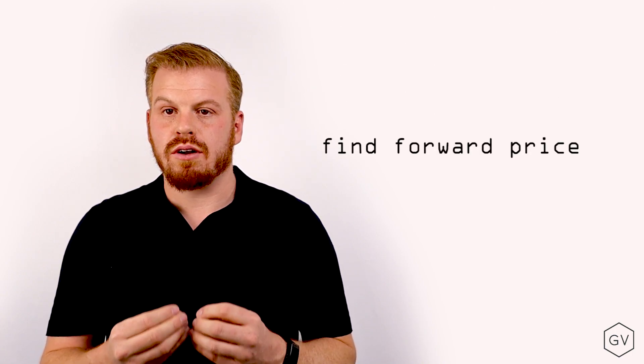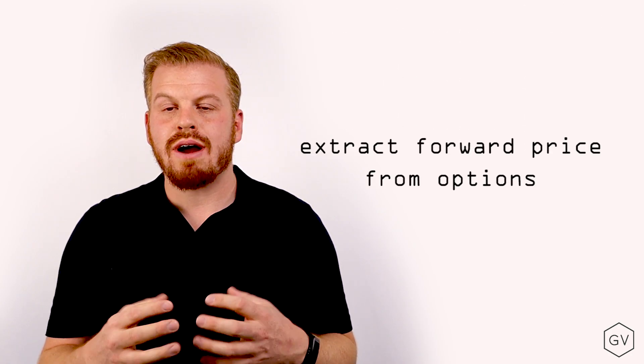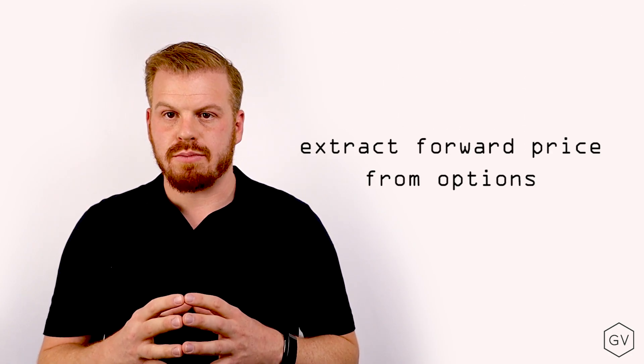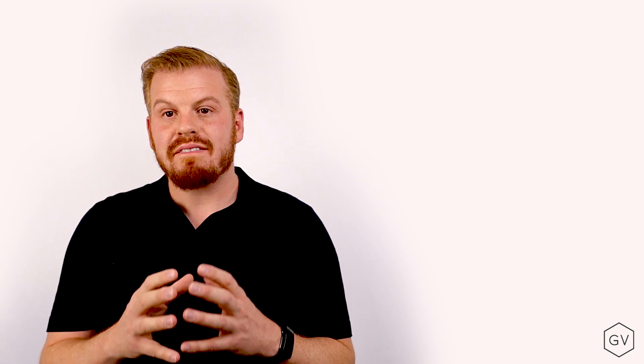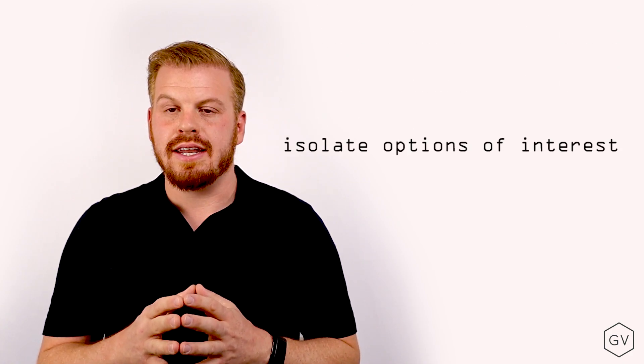This necessitates that we know what the forward price of the underlying is. We do this by looking at the strikes that are closest to the money and using the put-call parity in order to extract the forward price from the options market. Once we have that forward price extracted from the options market, we can go ahead and use that as our underlying price and exclude all the in the money options.